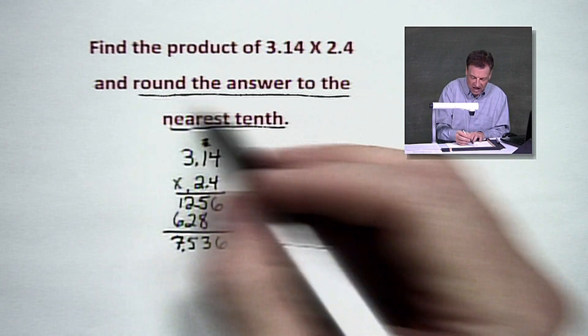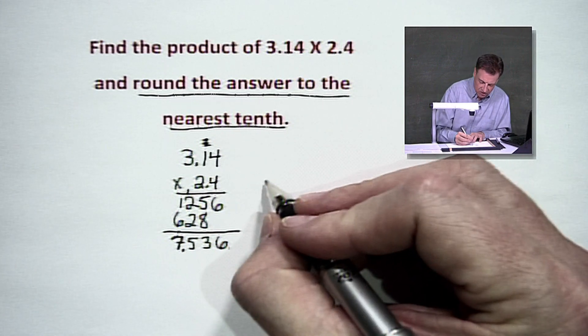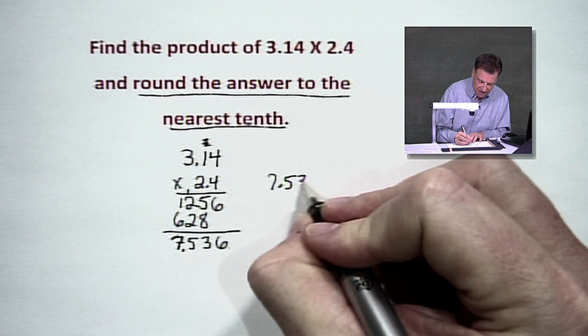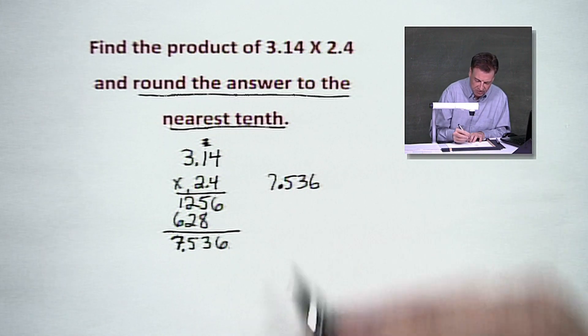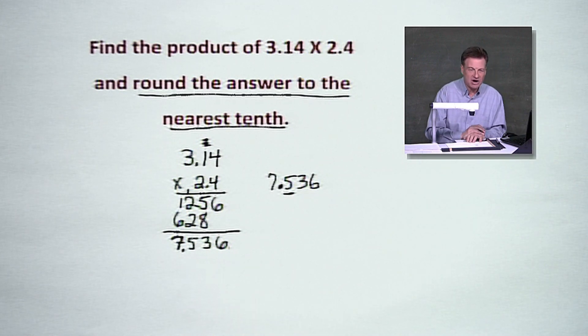But, as I did, we underline. We've got to go rounding. We've got to go into round mode here. So here we have it. We have 7 and that 536 hanging on. We're worried about whether the 5 is going to go up or it's going to stay the same.